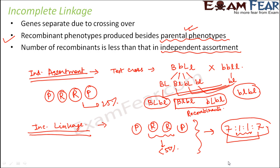Had it been independent assortment, the ratio would have been 1:1:1:1, each with 25% possibility, with recombinants having nearly the same probability as parental types. The way genes are linked determines how much crossing over takes place, and the amount of crossing over determines the number of recombinants formed.